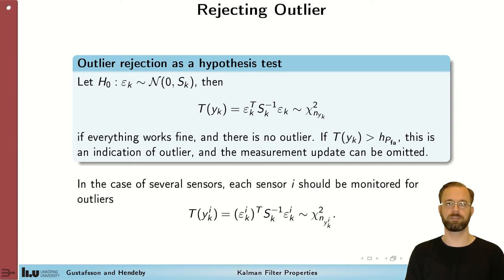If this squared norm, indicated here, is too large, so we have a large deviation between the predicted and the expected measurement, then we consider this an outlier and not use it. This can also be done in batches.